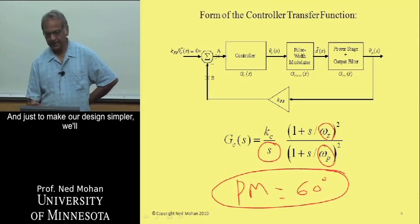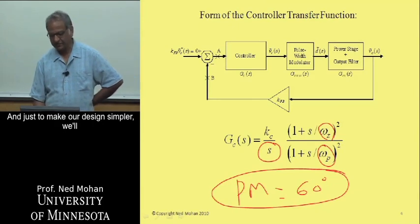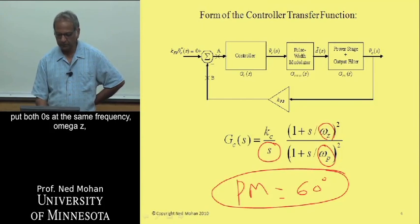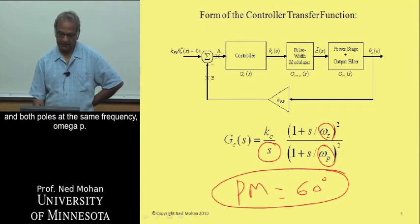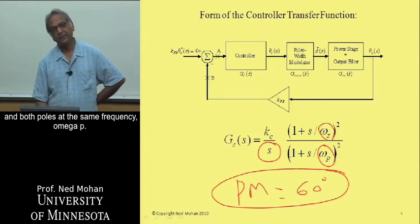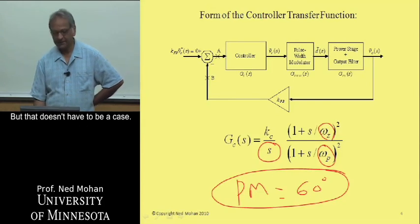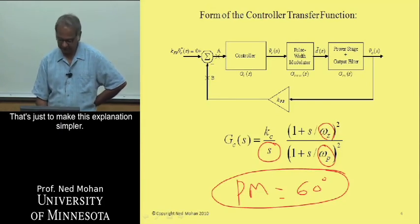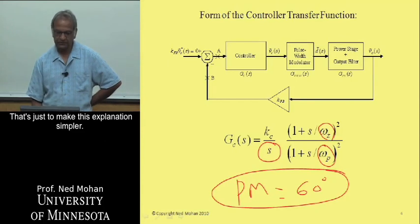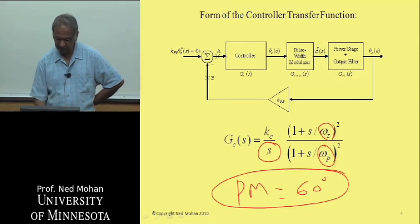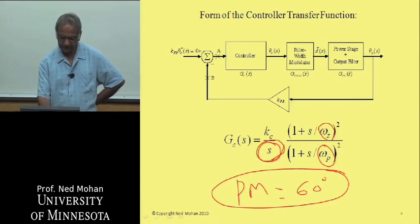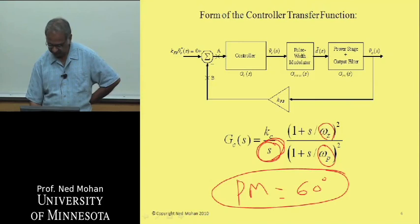To make our design simpler, we'll put both zeros at the same frequency omega Z, and both poles at the same frequency omega P — though that doesn't have to be the case; it's just to make this explanation simpler. We also need the pole at the origin to give us zero steady-state error.